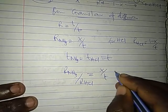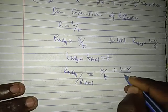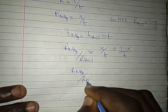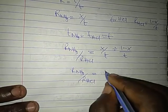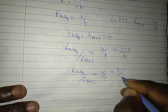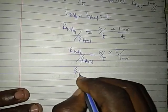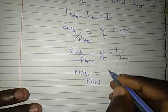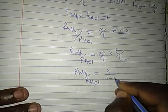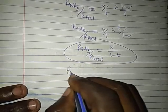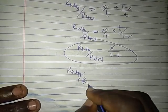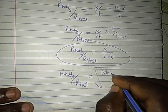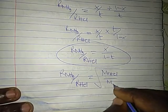x divided by t, then divided by 1 minus x divided by t. Rate of NH3 divided by rate of HCl. This is equal to x divided by t times t divided by 1 minus x. So rate of NH3 divided by rate of HCl is equal to the square root of molar mass of HCl divided by molar mass of NH3.